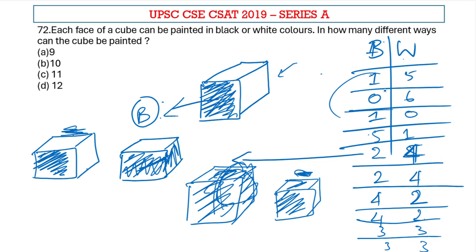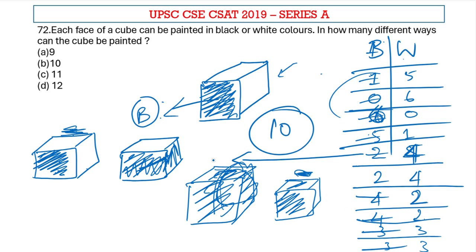So basically we can just add up these cases — that is six, sorry — one, two, three, four, five, six, seven, eight, nine, ten. So basically there are ten ways in which I can paint a cube. Therefore option B is the right answer.